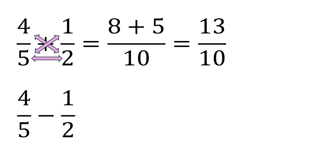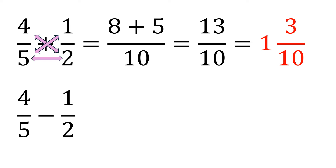This result is an improper fraction — we have to change it into mixed form. We'll discuss separately how to do that, but an improper fraction is one where the numerator is bigger than the denominator. We always write the final answer in mixed form.